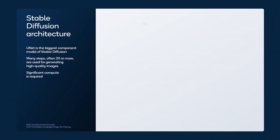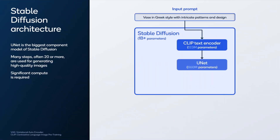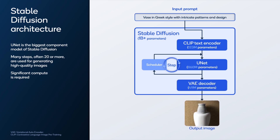The stable diffusion architecture has a text encoder, a UNET block, a VAE decoder, and a scheduler as part of the inference pipeline. The UNET is the biggest component model and is repeated many times to denoise the image.